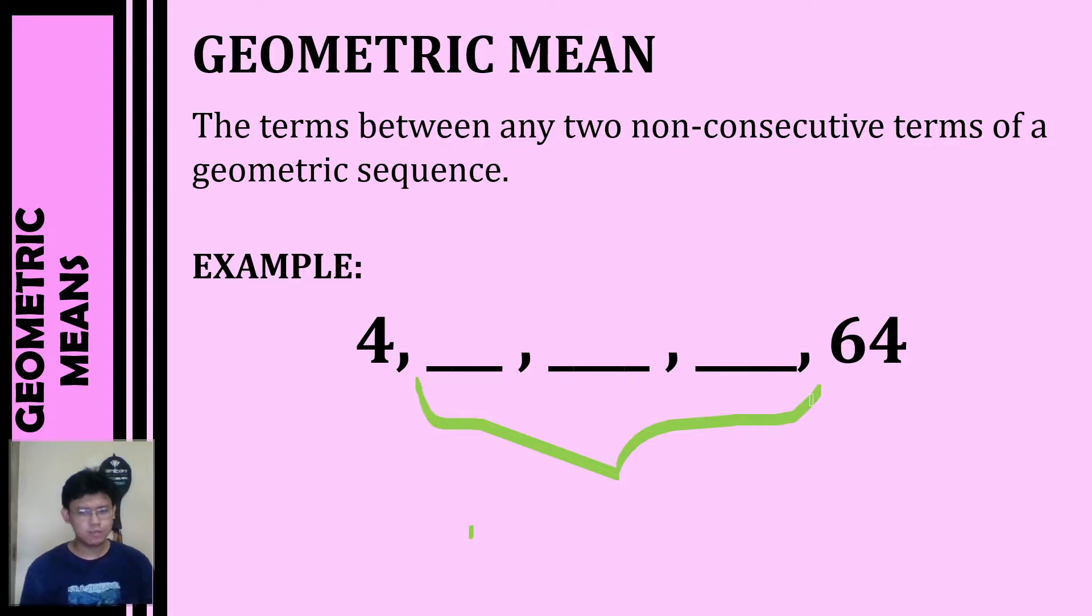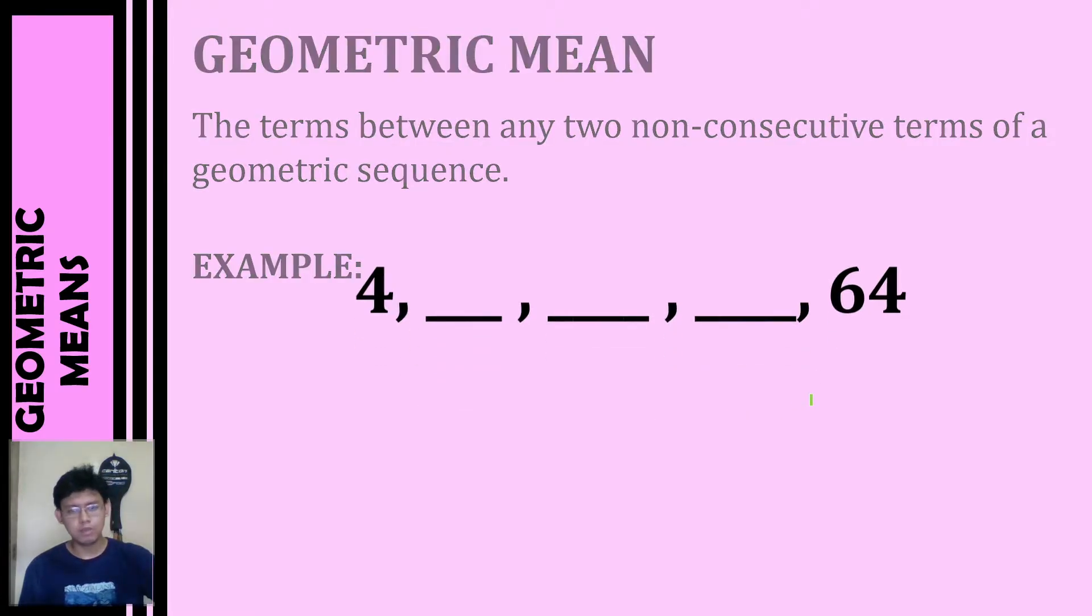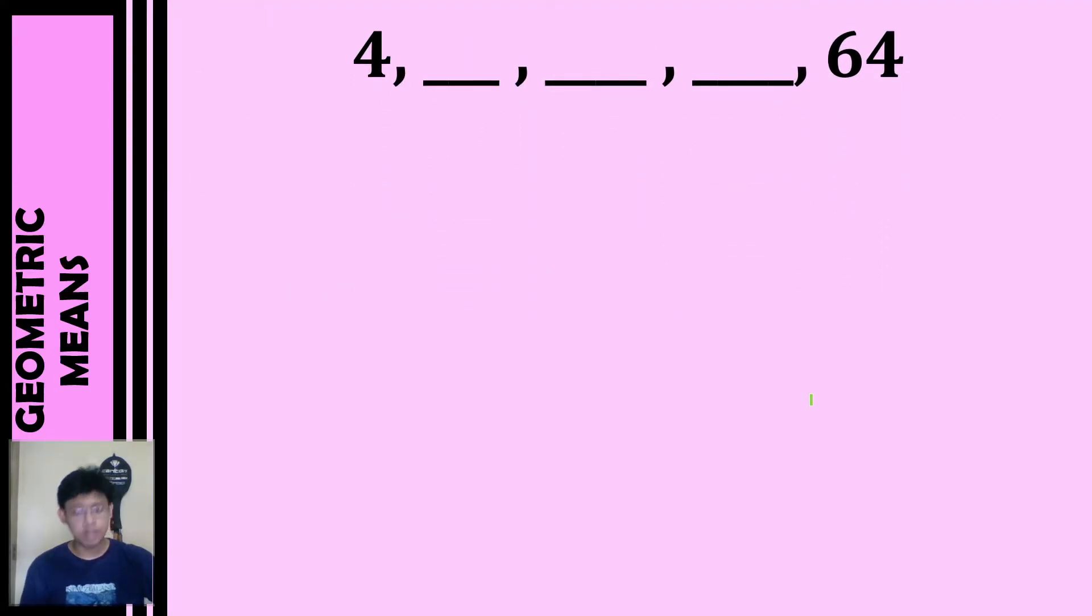So how do we solve a geometric mean? To solve this, we will still use the same formula: x sub n equals x sub 1 times r raised to n minus 1. In this case, we're not going to solve for the nth term of a geometric sequence, but instead we're going to look for the common ratio.